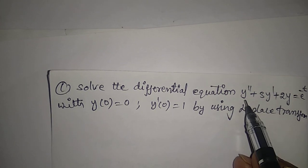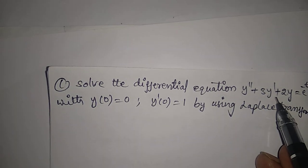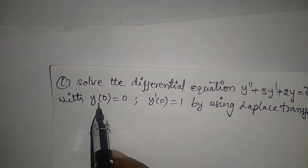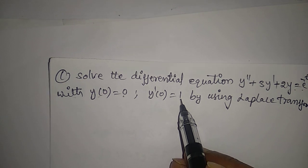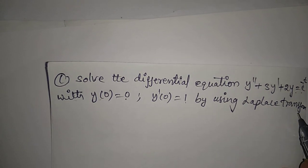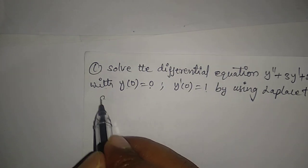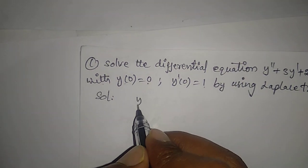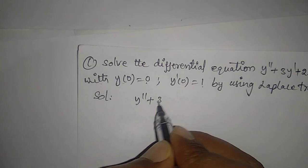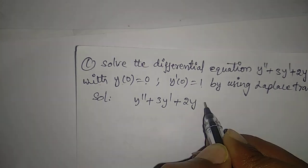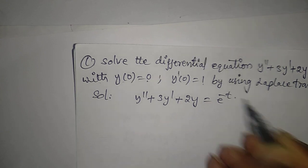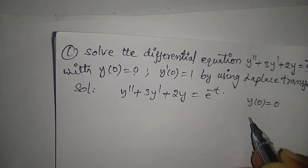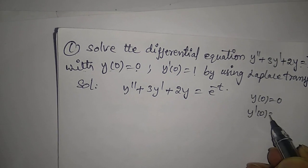Solve the differential equation y'' + 3y' + 2y = e^(-t), with initial conditions y(0) = 0 and y'(0) = 1, using Laplace transform.